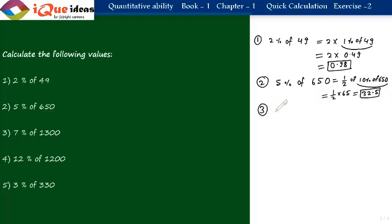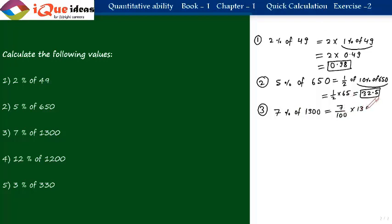Question 3: 7 percent of 1300. Here both 7 and 13 are prime numbers, so there is no shortcut. We use the fundamental method: 7 by 100 into 1300. The zeros cancel, leaving 7 into 13, which equals 91. So the answer is 91.